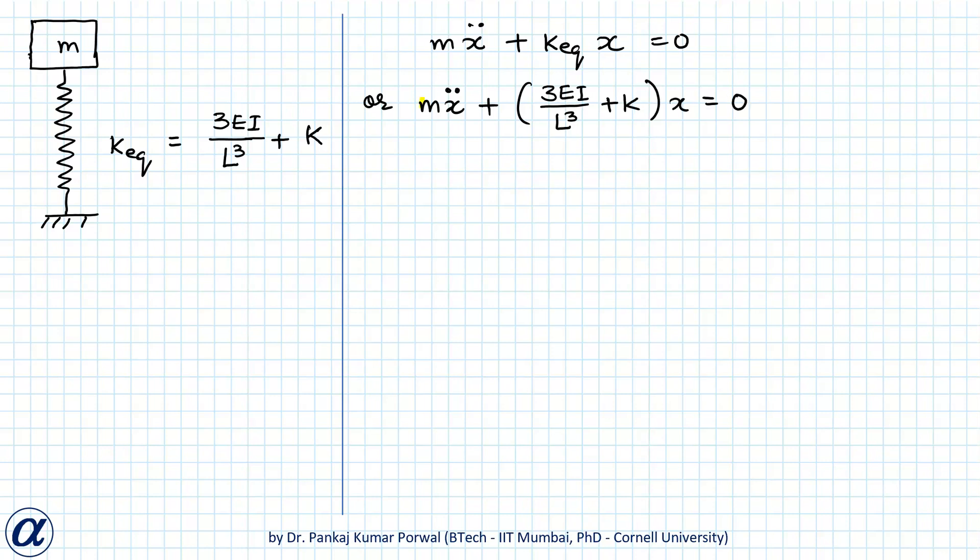The frequency of the system ω is given by K equivalent upon M. That will be equal to the square root of 3EI upon L cube plus K, divided by M.